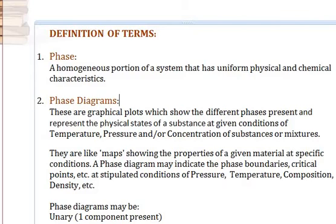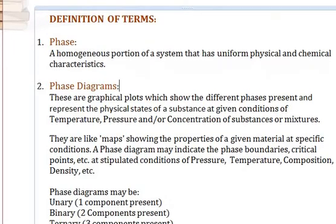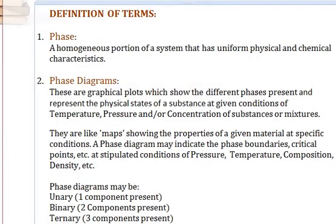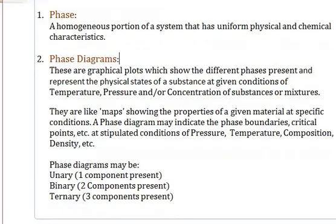Water's phases are liquid, vapor, and solid. We also have the binary phase diagram, which contains two components such as copper and nickel, or aluminium and tin. Then there's the ternary phase diagram, which contains three components. We are going to show some examples of all of these phase diagrams.